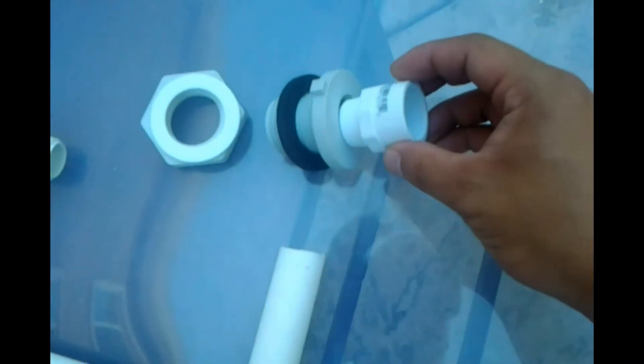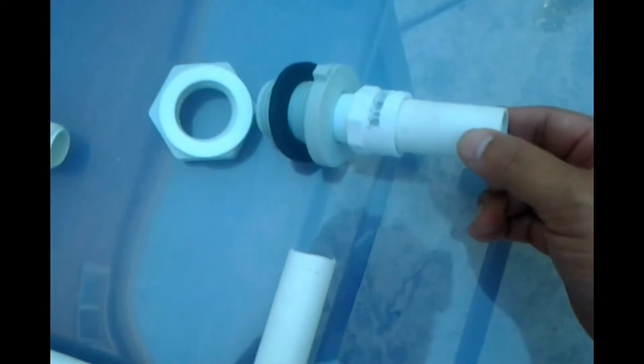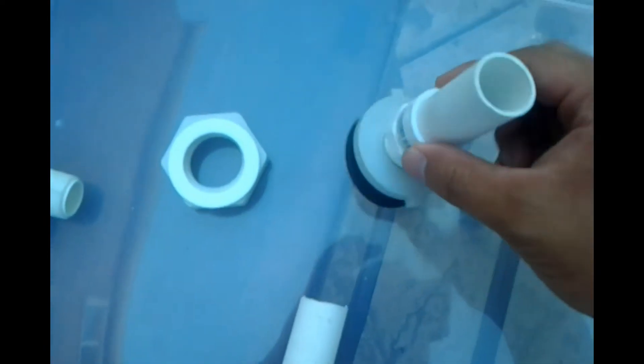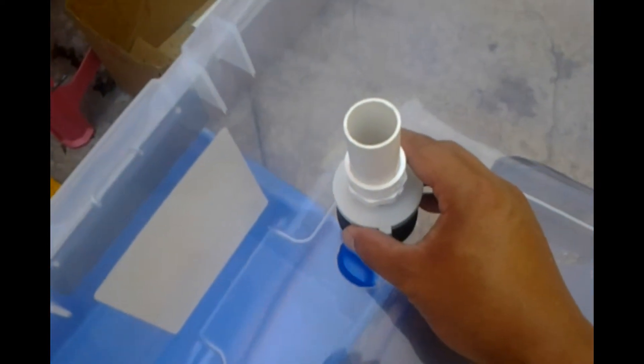This is the top of the bulkhead, it's going to screw on with this fitting, and then you're going to put a pipe in here, and that's going to be your standpipe, and it's going to be standing up like that, so it can expel the water out.